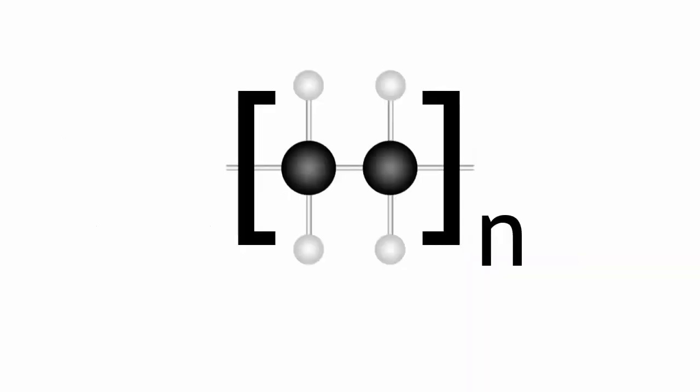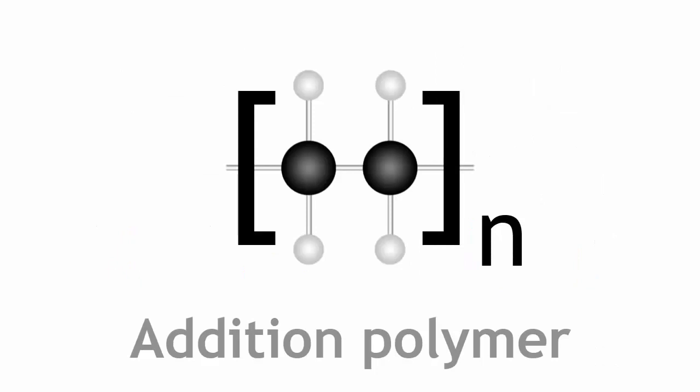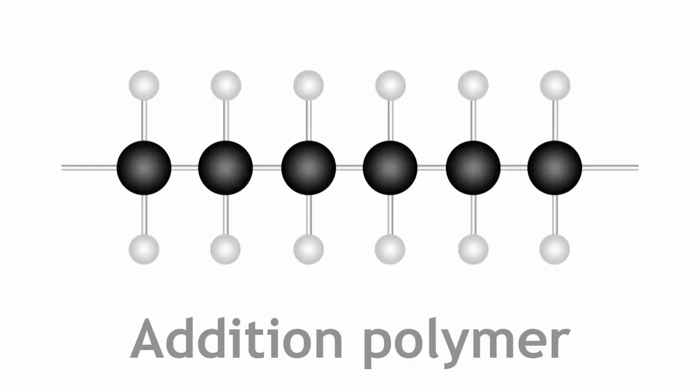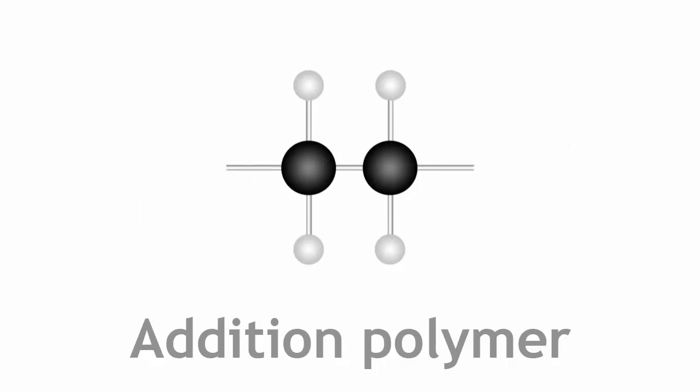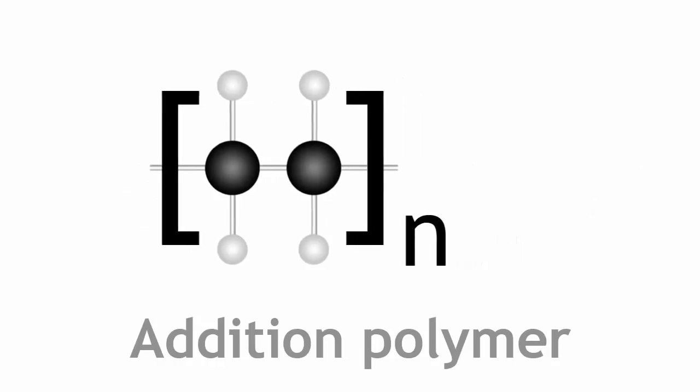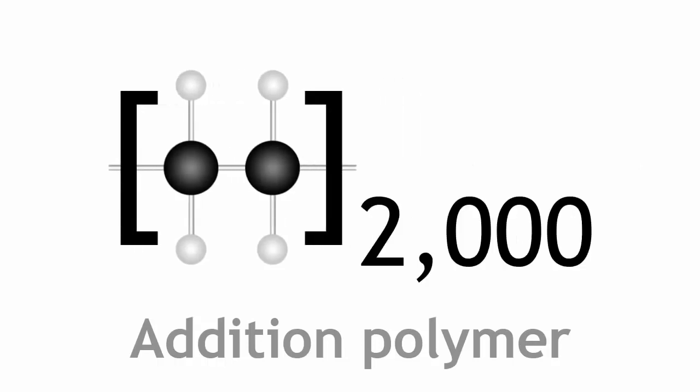This type of polymer is called an addition polymer. The monomer is just repeated, and only one product, the polymer itself, is formed. The number of molecules that join together can vary, anything between 2,000 and even 20,000, making some very long polyethene molecules.